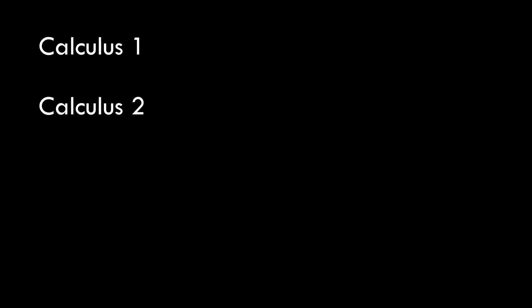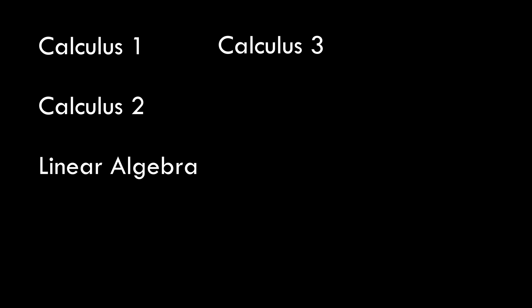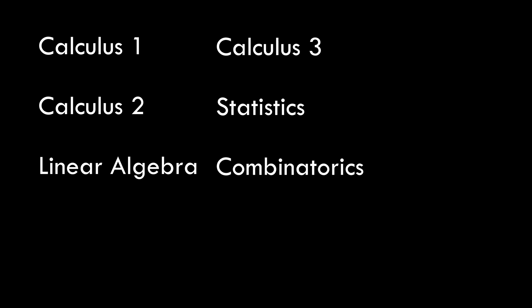Let's talk about every math class that all computer science majors are required to take. First, you have Calculus 1 and 2, which comes as no surprise, followed by linear algebra. After linear algebra and the first two calculus courses, you can take multivariable calculus, after which you can take probability and statistics. And then at some point you'll take combinatorics. All of these classes are pretty standard across most computer science degrees regardless of where you're getting them. Depending on your previous math background, you'll find some of them harder than others.